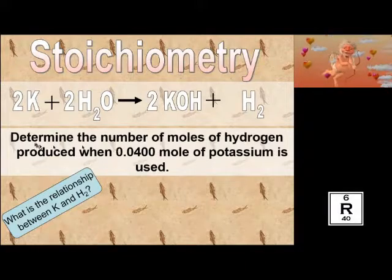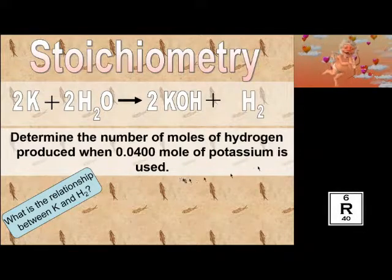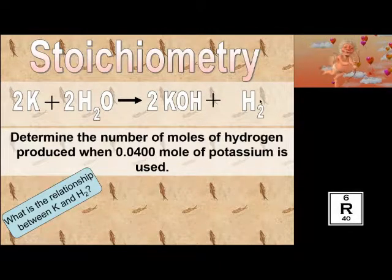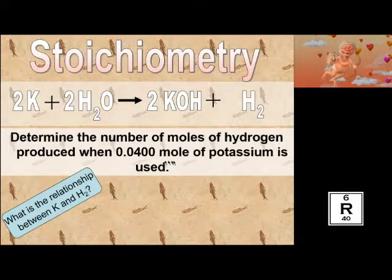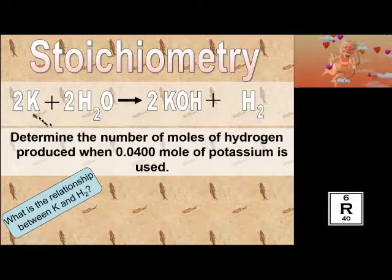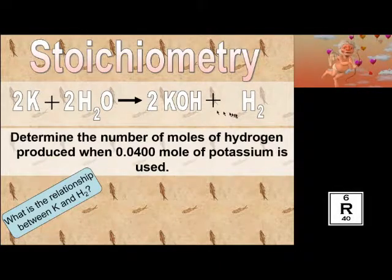A stoichiometry problem would be like this: determine the number of moles of hydrogen produced when 0.0400 moles of potassium is used. In stoichiometry, we're converting — we've got some potassium and I want to know how much hydrogen is produced. Up to this point in class, you've been able to convert moles to atoms using Avogadro's number, and moles to grams using the molar mass on the periodic table. Stoichiometry is converting moles of one substance — in this case potassium — into moles of a different substance. In order to do this, you must have a balanced equation.